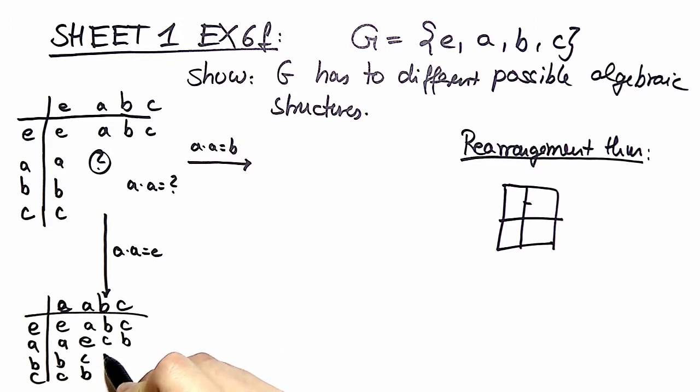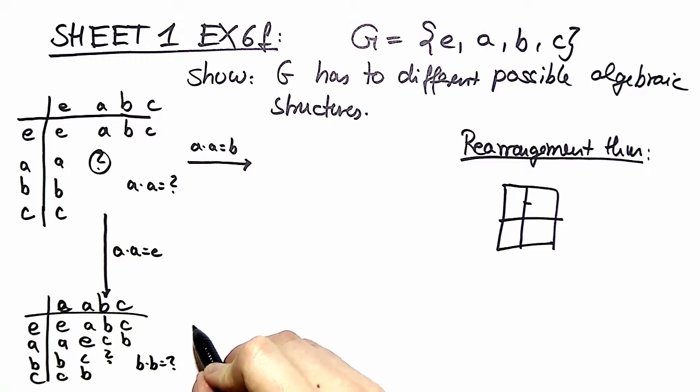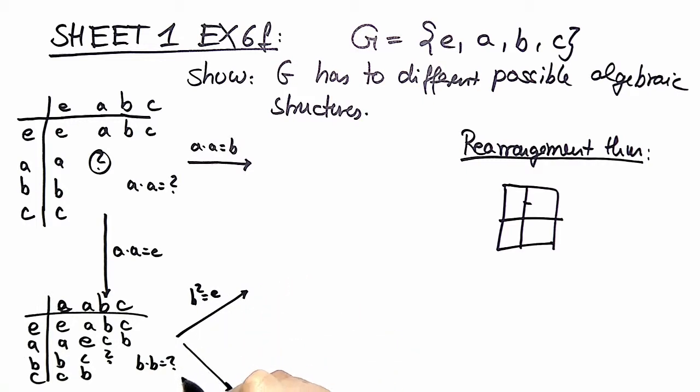We can mirror those arguments and write down the same two letters over here. Now we have a question. What is b times b? b times b can have two different choices again. One choice b squared equal e. Other choice b squared equal a. Both choices are legitimate choices.